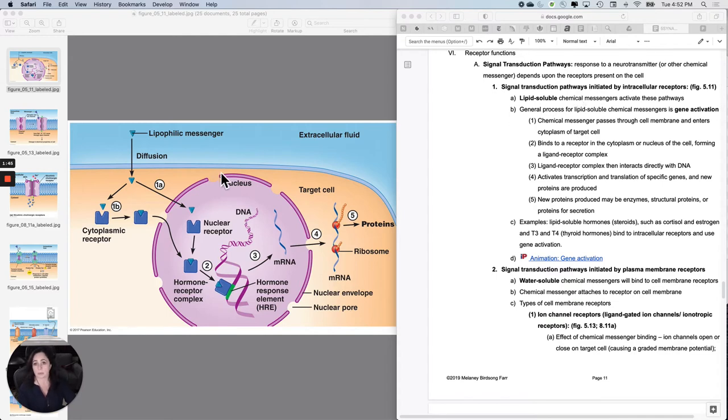If it's lipid soluble, remember we've learned this multiple times, then its receptor is likely intracellular. It's either in the cytoplasm or maybe it's all the way in the nucleus. So lipid soluble chemical messengers activate a pathway that is really direct. You don't have to play very much telephone if you can go straight into the nucleus. So this pathway is called gene activation.